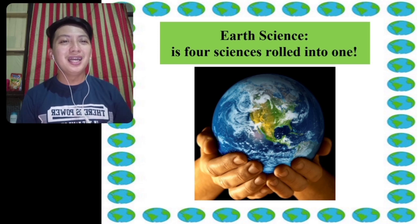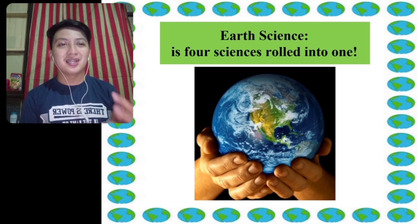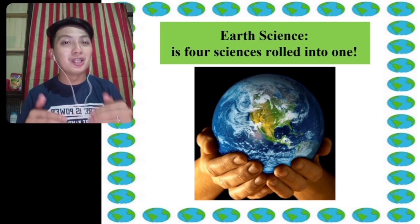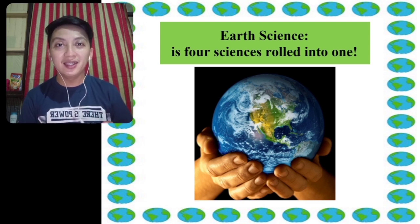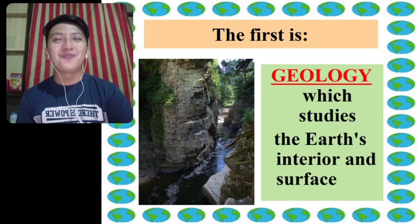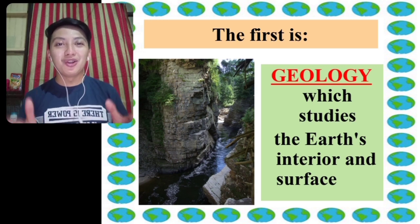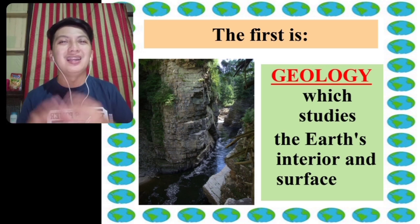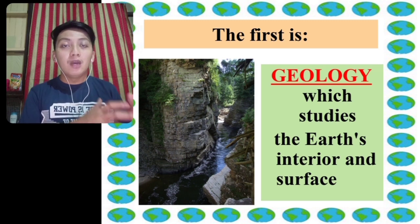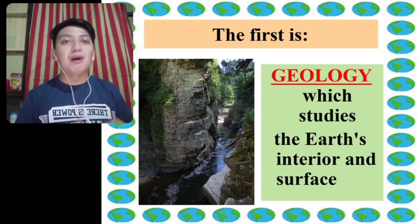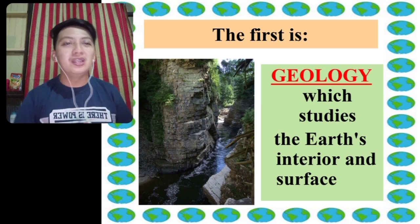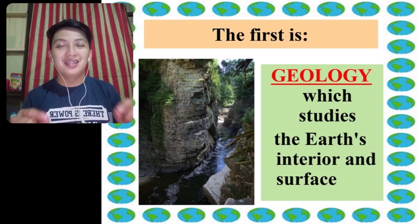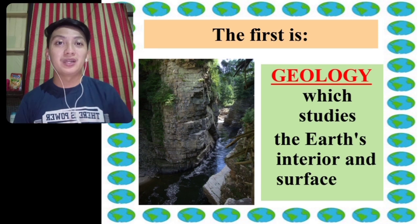Earth science has four sciences rolled into one — four branches of Earth and Space Science. The first one is Geology. Geology came from the word 'geo' meaning rocks, land, or ground, and 'logos' meaning to study. So geology is the study of the earth's interior and surface, including the origin of the earth.